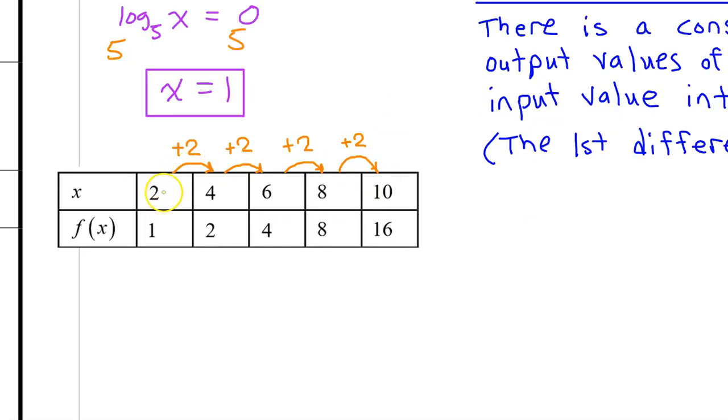Or you could say when the first differences of f of x are equal over equal length input value intervals. First of all, notice that we do have equal length intervals, so far so good for linear. However, here are the changes in the output values. They are not constant. The first differences are not equal. So f of x is not linear.